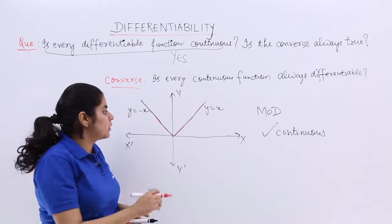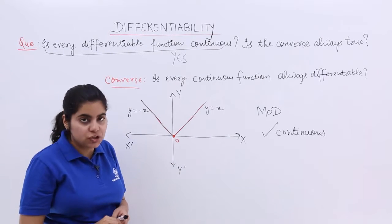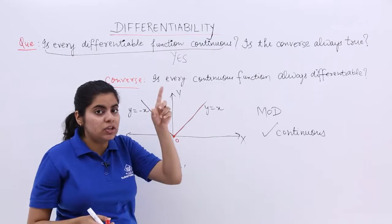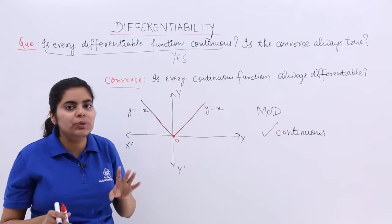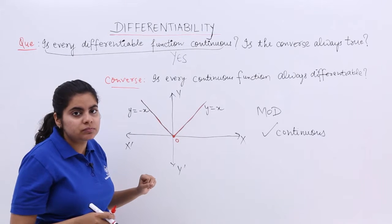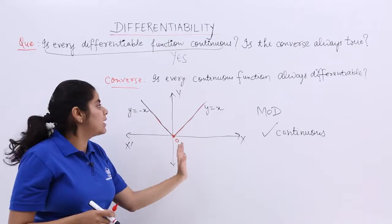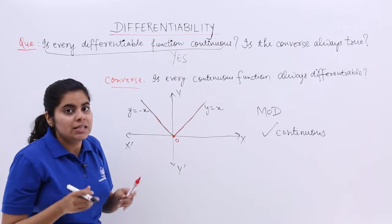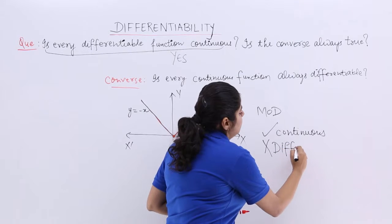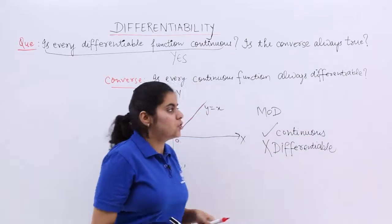Talking about differentiability, see this point. This point is x equals 0 and y equals 0 basically, origin. At this point, if I tell you to draw a unique tangent - because differentiability by geometrical meaning is unique tangent. Can you draw a unique tangent? Is it possible? No. There are two tangents to it. One tangent would be pointing towards y equals x, the other towards y equals minus x. Since there is no unique tangent, so it is not differentiable.